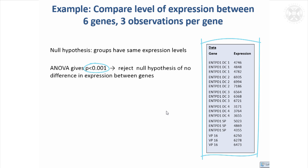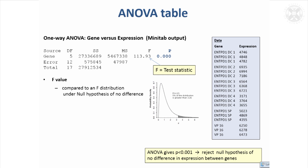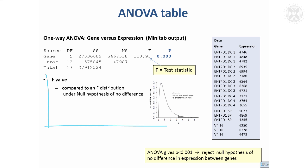We can reject the hypothesis that there's no difference in expression between the genes. To get a feel for the output from ANOVA, when done by hand it was necessary to produce a table of calculations. Instead of a t-statistic, we've got something called an F-statistic. Higher values of F — and there is a distribution for this F-statistic — mean a smaller probability that the null hypothesis is true. We get a very large F-statistic, which is huge compared to the F-distribution, giving a highly significant p-value.